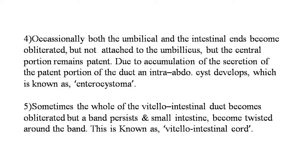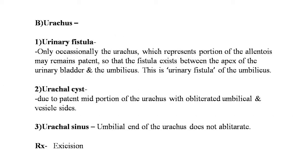The second abnormality of the umbilicus is the uracus, with three deformities: urinary fistula, urachal cyst, and urachal sinus. First, urinary fistula — the uracus, representing a portion of the allantois, may remain patent so that a fistula exists between the apex of the urinary bladder and the umbilicus. Second, urachal cyst forms due to a patent mid-portion of the uracus with obliterated umbilical and vesical ends. Third, urachal sinus occurs when the umbilical end of the uracus does not obliterate; treatment is excision.